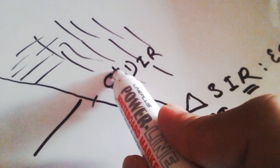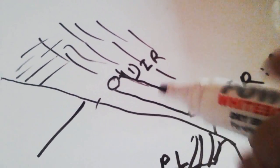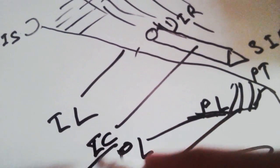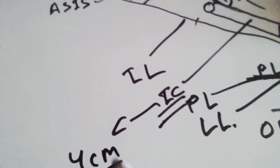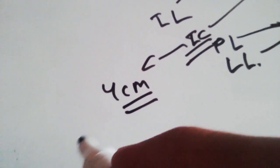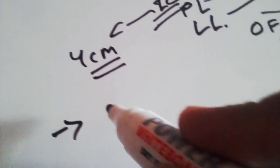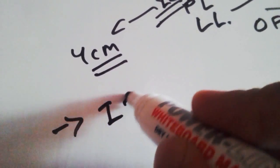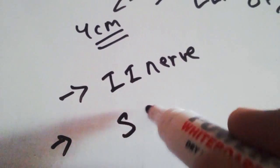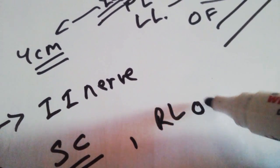The superficial and deep inguinal rings are joined together to form the inguinal canal. The inguinal canal is a muscular aponeurotic opening about 4 cm in length. Its contents include the ilioinguinal nerve and the spermatic cord in males, and the round ligament of the uterus in females.